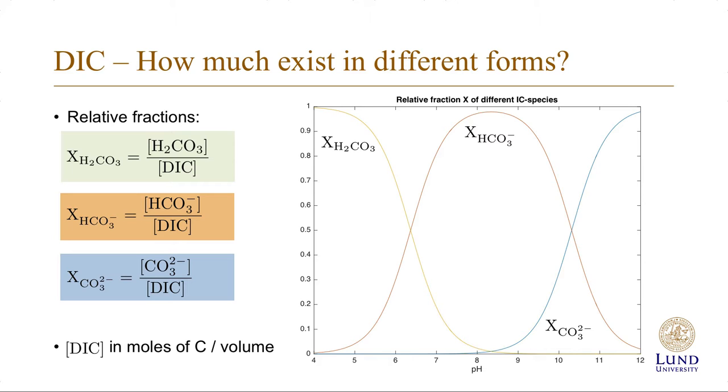At intermediate pHs we have bicarbonate, while carbonate ions start being dominant only at very high pH values. And it's worth noting that DIC is given in moles of carbon per volume of water sample.